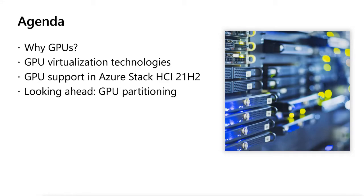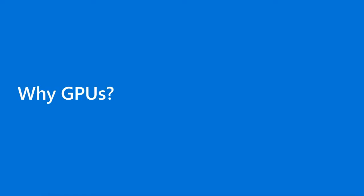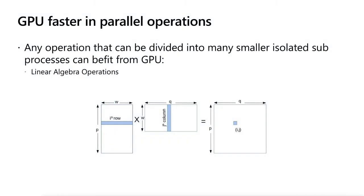Before we actually get into the tooling and how GPUs are going to be available as part of the highly available VMs, it's important to understand why GPUs are important and what type of processes can benefit from them. When it comes to modern applications, GPUs are faster for operations that can be divided into smaller isolated sub-processes, and those processes can then be given into smaller process controls that GPUs can handle.